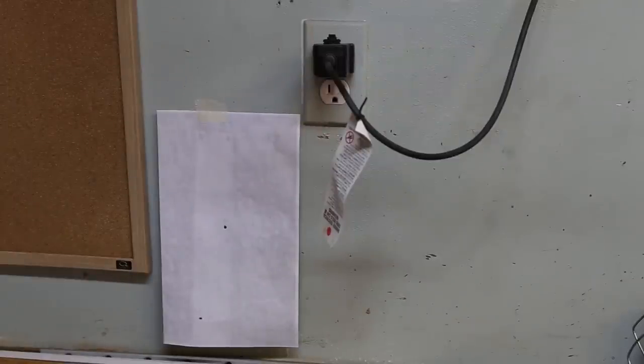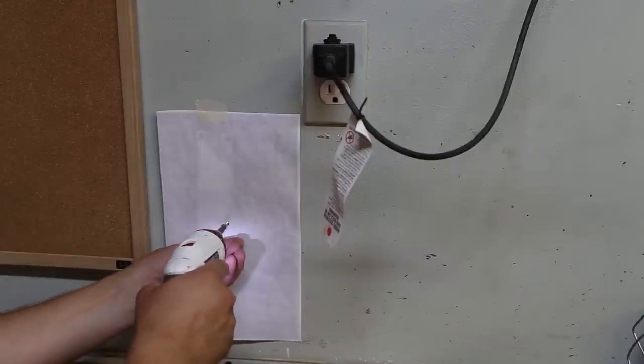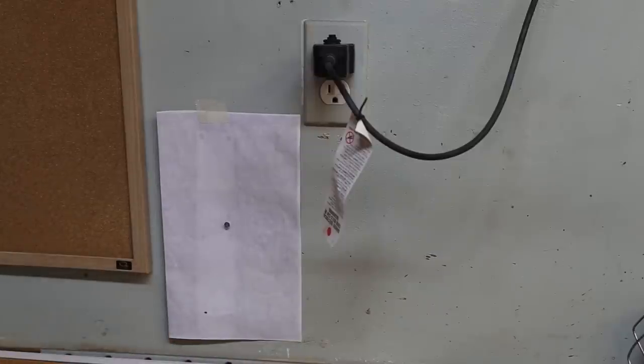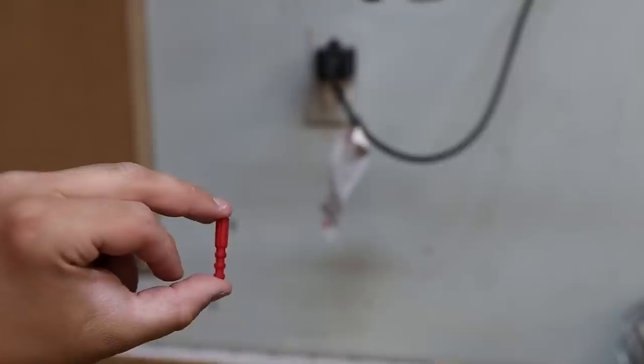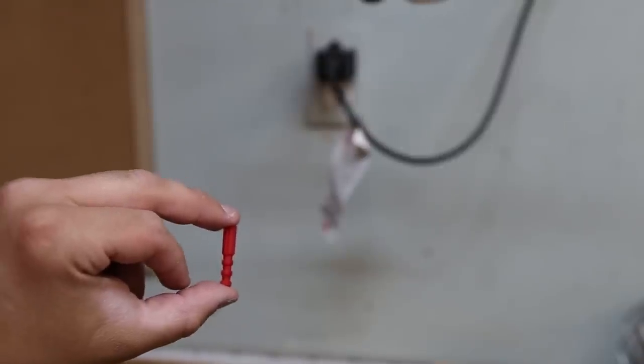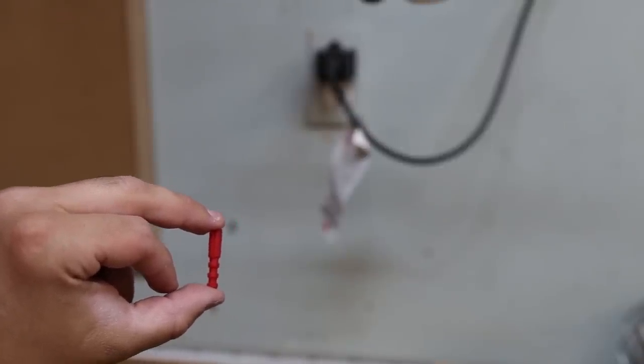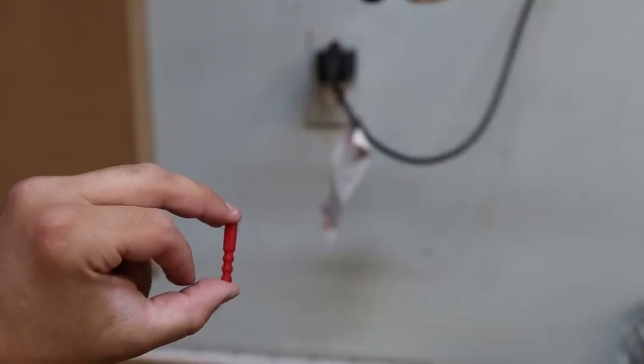Now we can go ahead and put the screws in. Once we put the screws in, we'll actually take them out. Now we have enough space to put the drywall anchors in. This way, when you're plugging and unplugging the appliances, the screws are not going to come out easily.